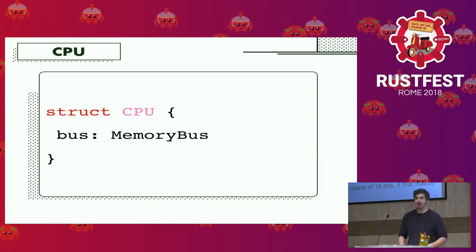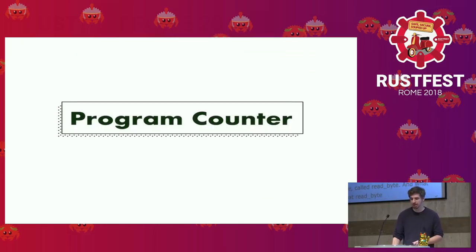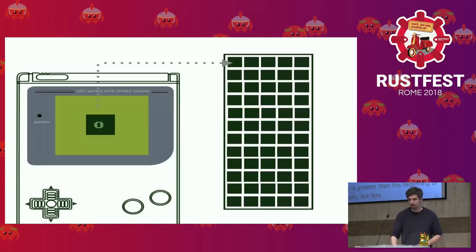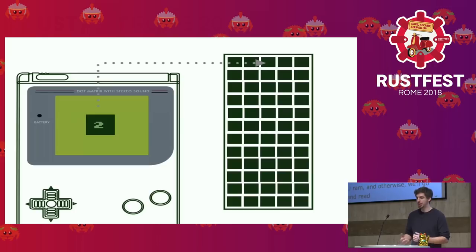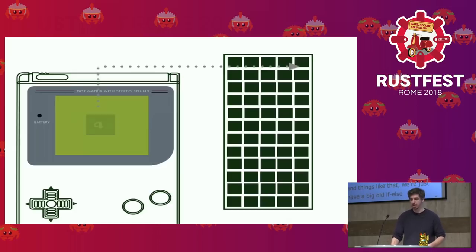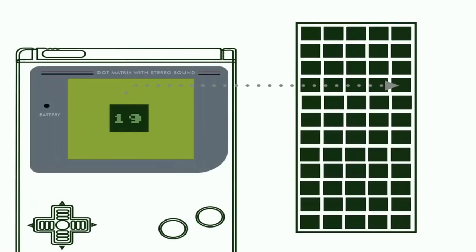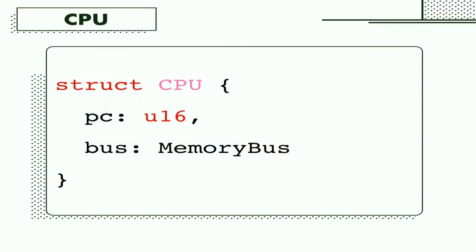The CPU is the overarching brains of the computer, and it holds onto the bus so the CPU can talk through the bus to the GPU. The CPU also has something called a program counter — basically just a number that indicates where in memory you're currently executing. Our program counter starts at zero. We execute the instruction at zero and move forward; it jumps to address two, then address four, then maybe a jump instruction sends it to address nine, then address 19. That's all you're doing — keeping track of what is the currently executing instruction. Our CPU struct is pretty simple: it's got a program counter and a memory bus.